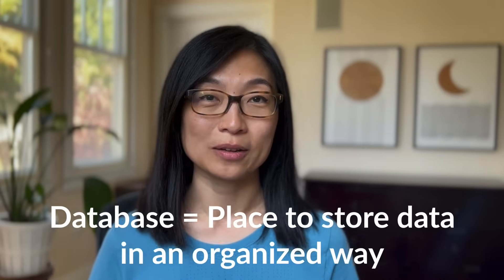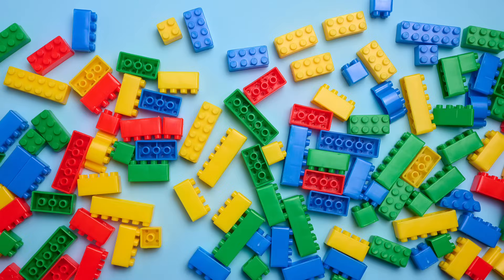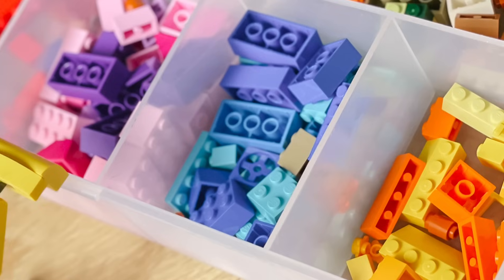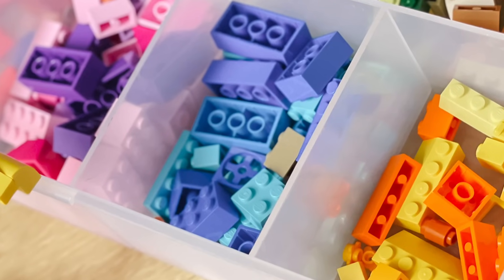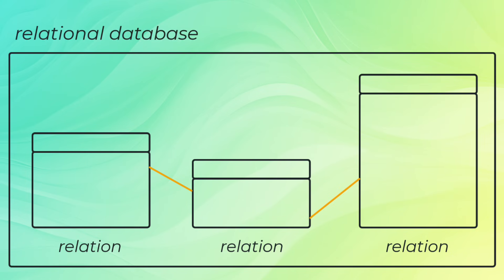So what is a database exactly? It's a place to store data in an organized way. Now imagine you have a piece of data, which is represented by this Lego piece. If you were to collect a ton of data, you would have this whole pile of Lego pieces, but that's hard to sift through. So you would have to organize it in some way. You can think of this storage system for Lego pieces as a database for data — everything is now neatly sorted and easy to find. And just like there are many ways to organize Lego pieces, there are many ways to organize data. The most common way is to use tables that are connected to one another. These tables are also called relations, which is why you'll sometimes hear this organizational structure called a relational database.